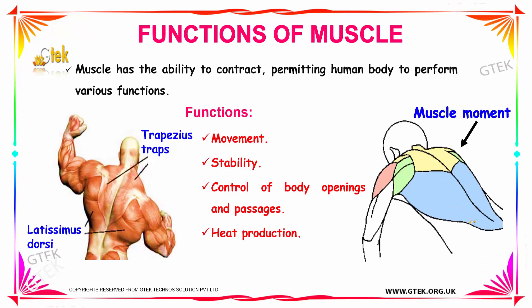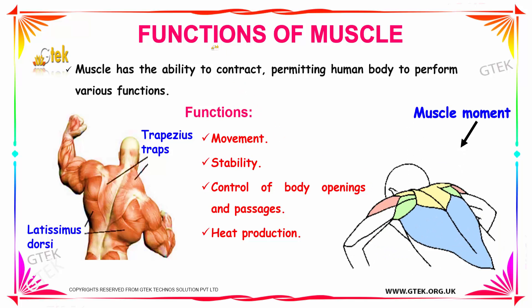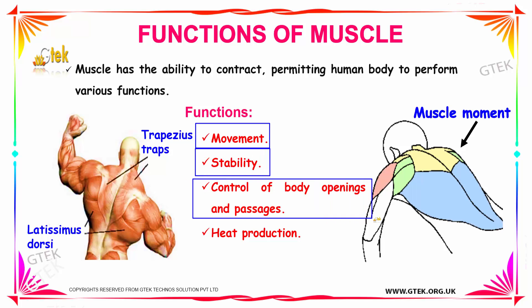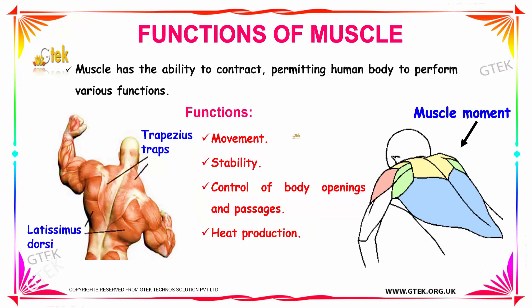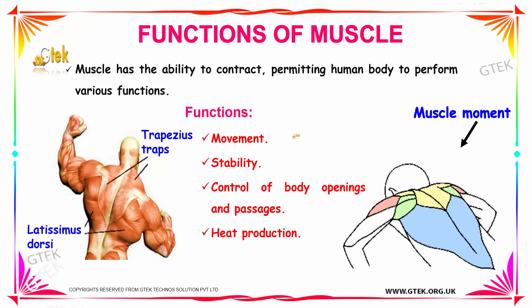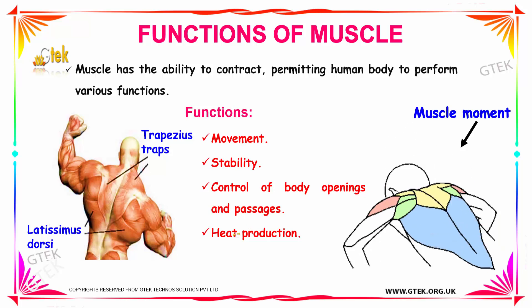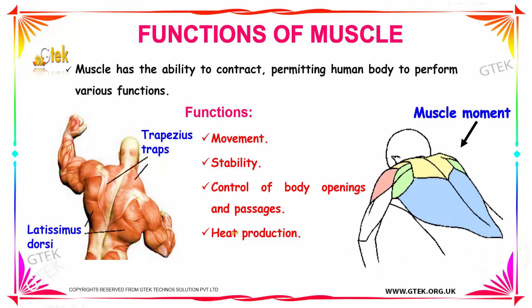Next we are going to see the basic functions of a muscle. A muscle has the ability to contract, permitting the human body to perform various functions such as movement, stability, control of body openings and passages, and heat production. These are some of the basic functions that muscles in the human body perform — they help us to move, to have a stable body, and they control body openings and the heat production of the body.